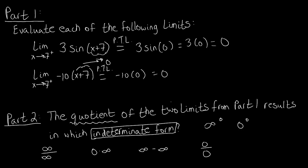Part 2 asks us which indeterminate form results from taking the quotient of the two limits from part 1. Since both limits equal 0, taking the quotient gives us 0 divided by 0, which is our indeterminate form. And we know that this is not a determinate form.